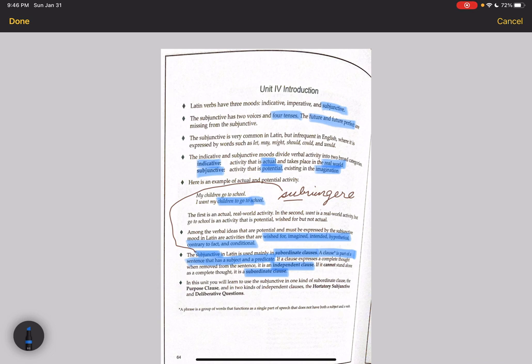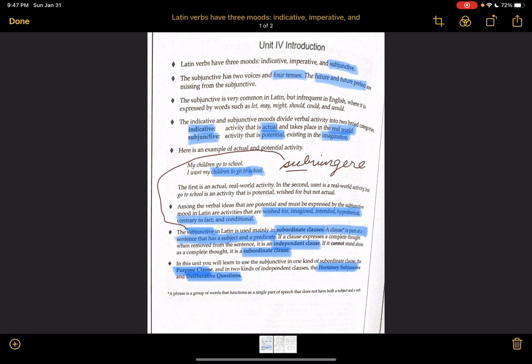Finally, in this unit, you will learn to use the subjunctive in one kind of subordinate clause, the purpose clause, and two kinds of independent clause, the hortatory subjunctive and deliberative questions. All right, so much for the introduction. Let's look at your lesson.